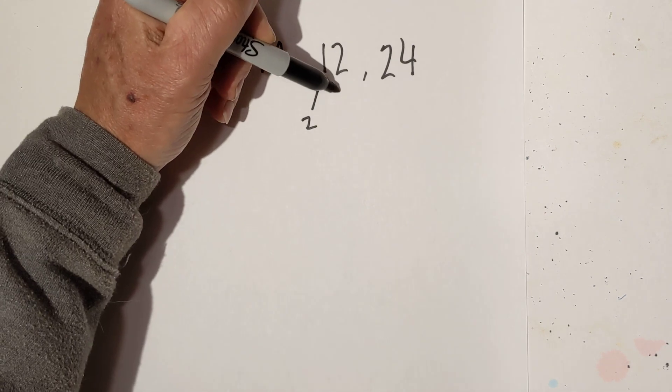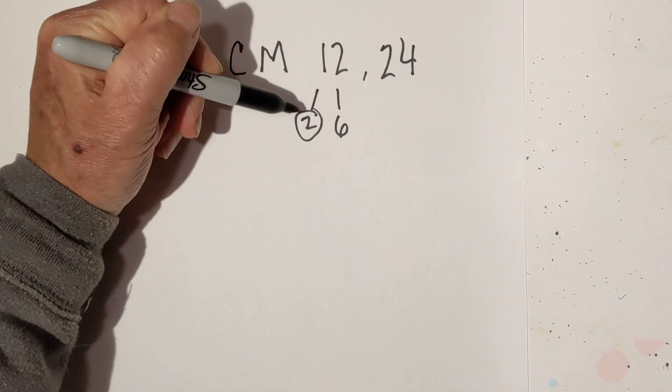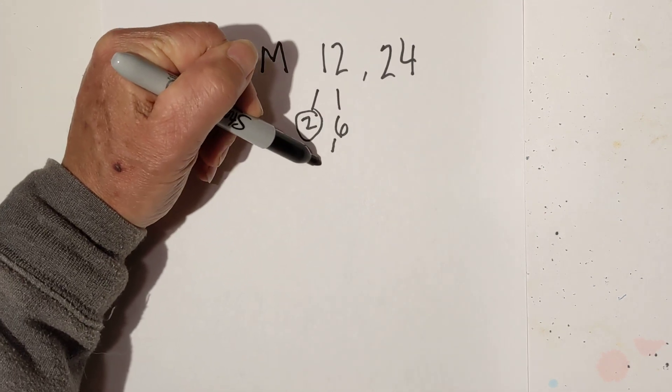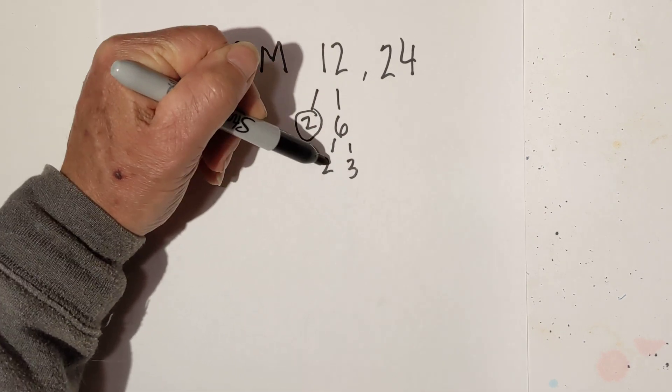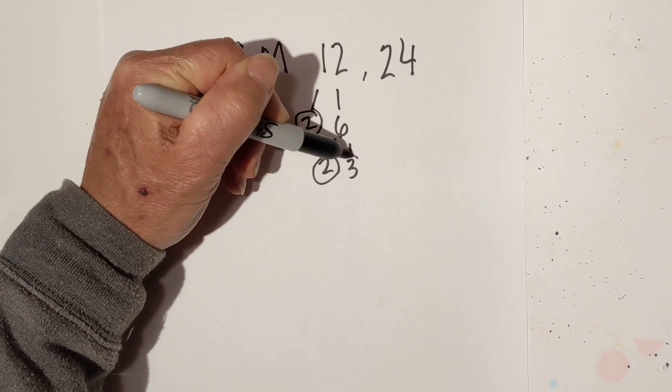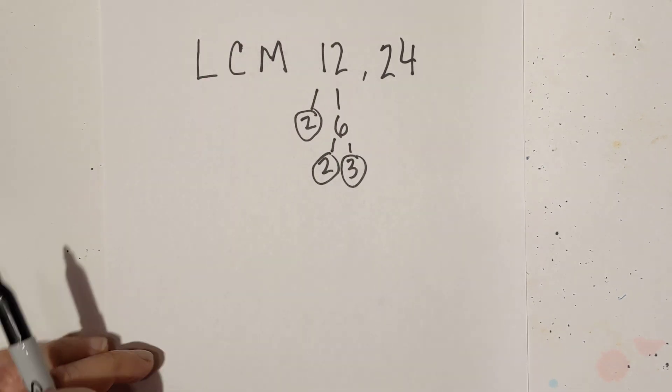So we have 2 times 6, circle the 2 because it's prime, and then 2 times 3. Circle both of these.